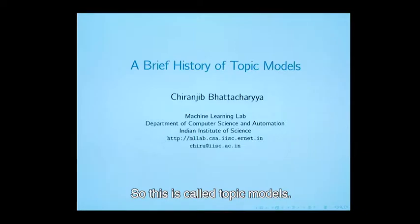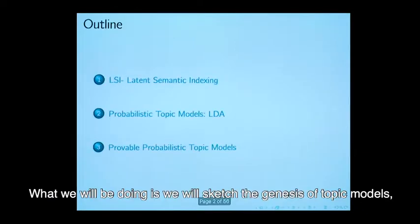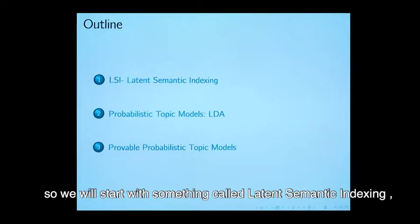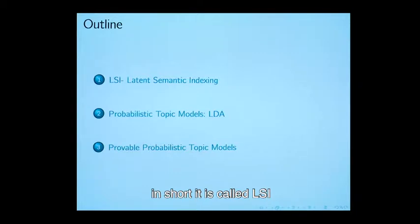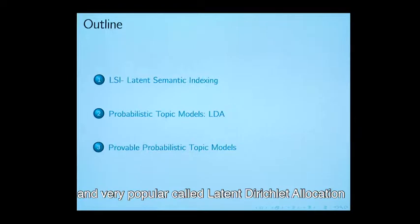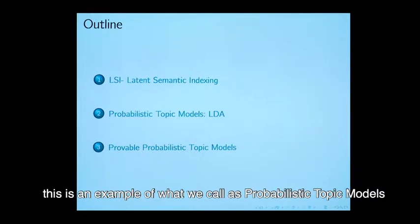This is called topic models. We will sketch the genesis of topic models as it has progressed over the last three decades. We will start with latent semantic indexing, in short LSI. And then there is a new variant which is now widely used and very popular called latent Dirichlet allocation. This is an example of what we call probabilistic topic models.